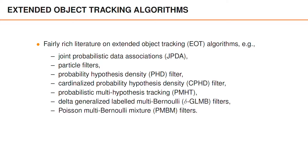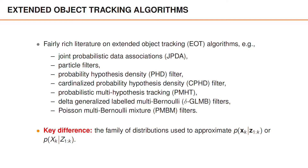For instance, there are versions of the JPDA, PHD, and CPHD filters for extended object tracking. Another algorithm that has successfully been adapted to extended object tracking is the probabilistic multi-hypothesis tracking algorithm, which I think has received less attention than it deserves. Finally, we also have conjugate prior algorithms such as the delta GLMB and the PMBM filters.